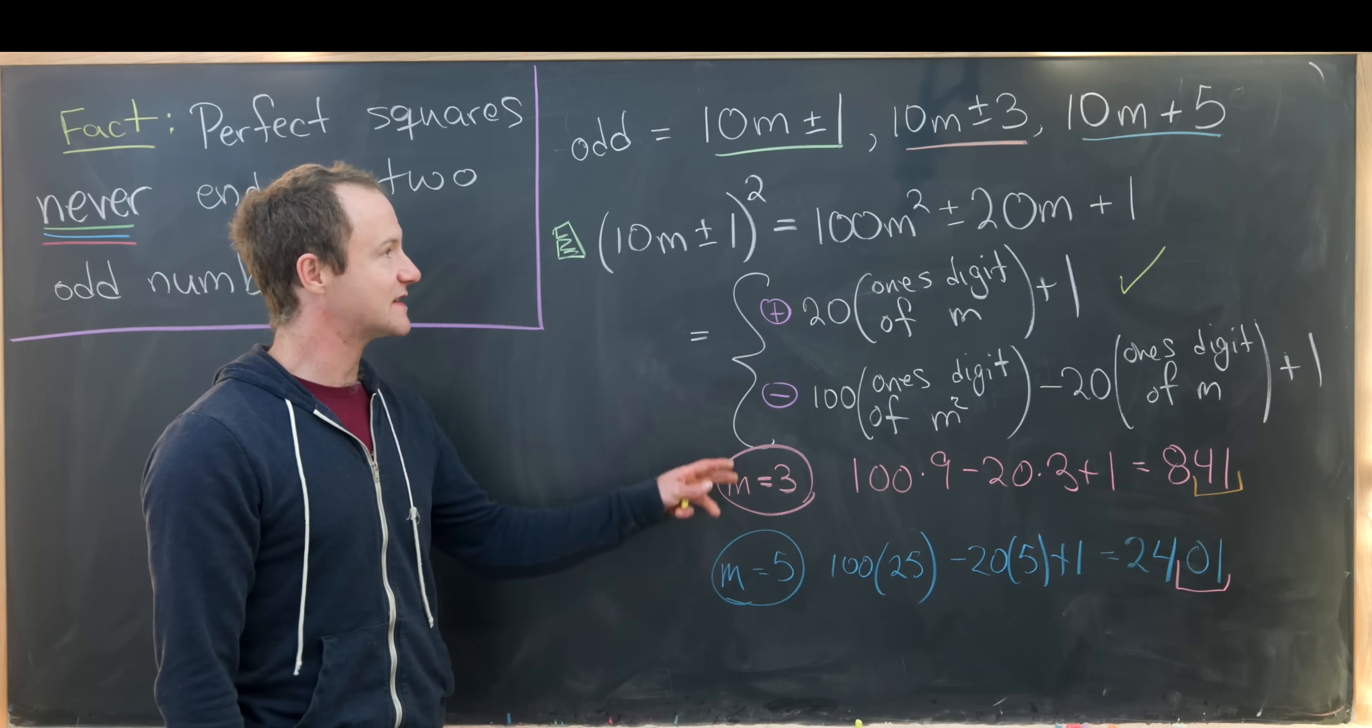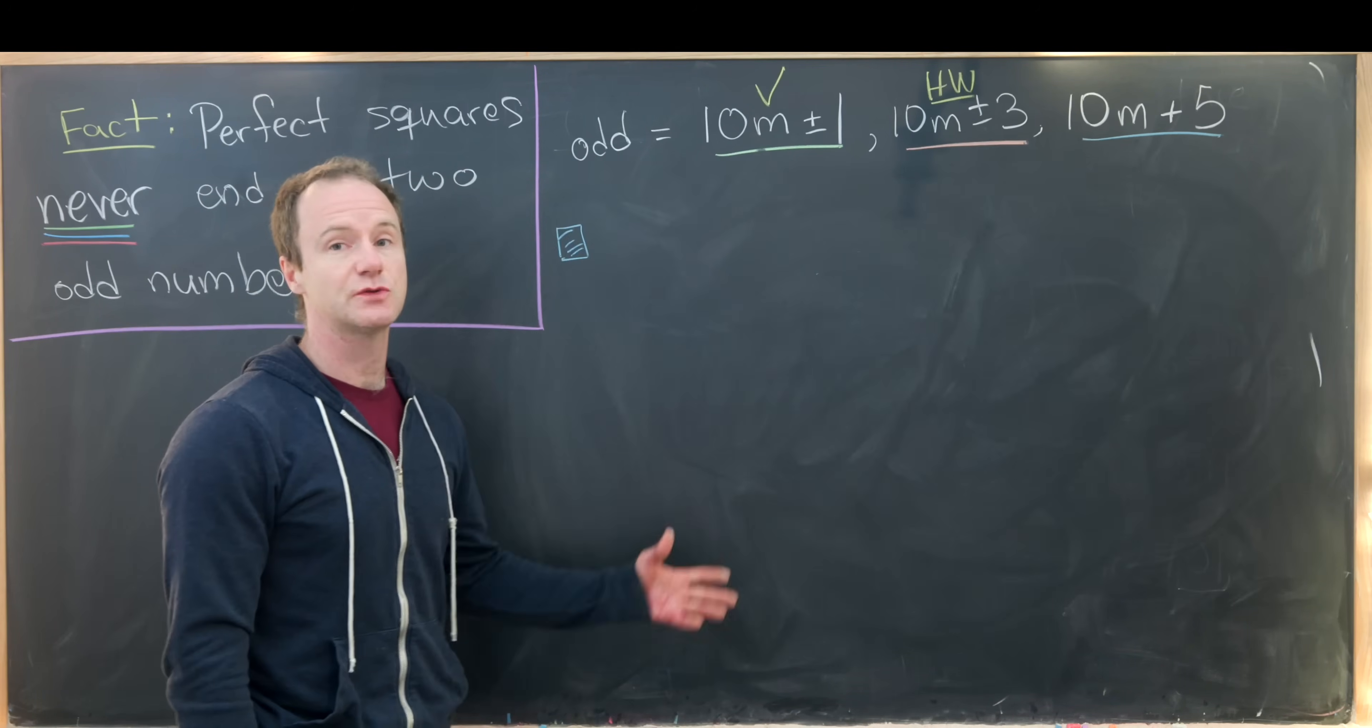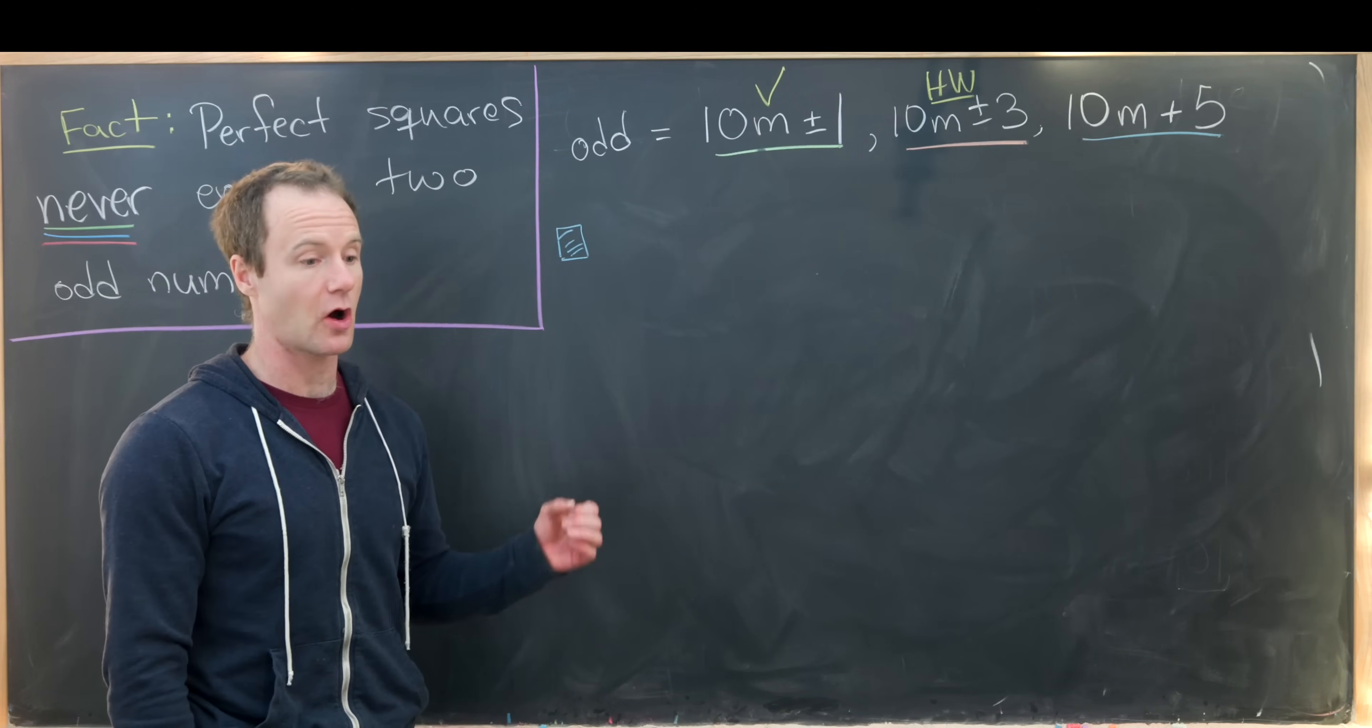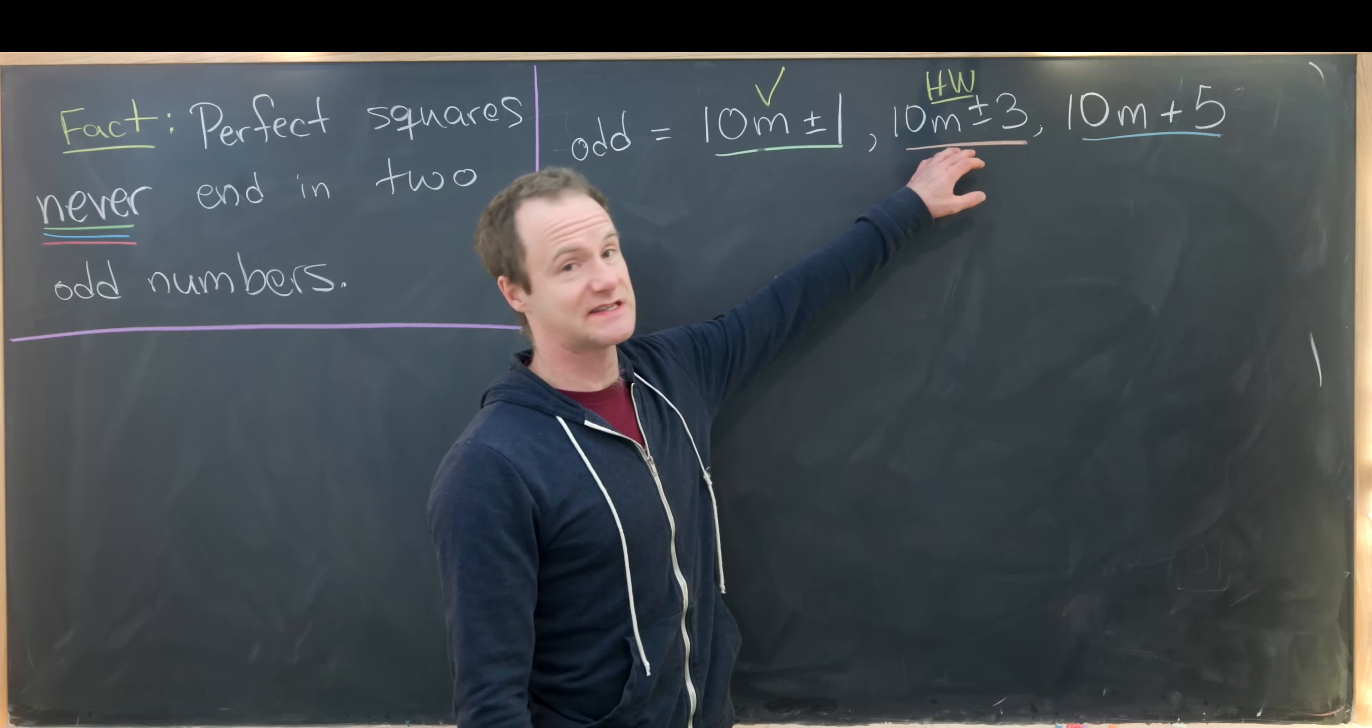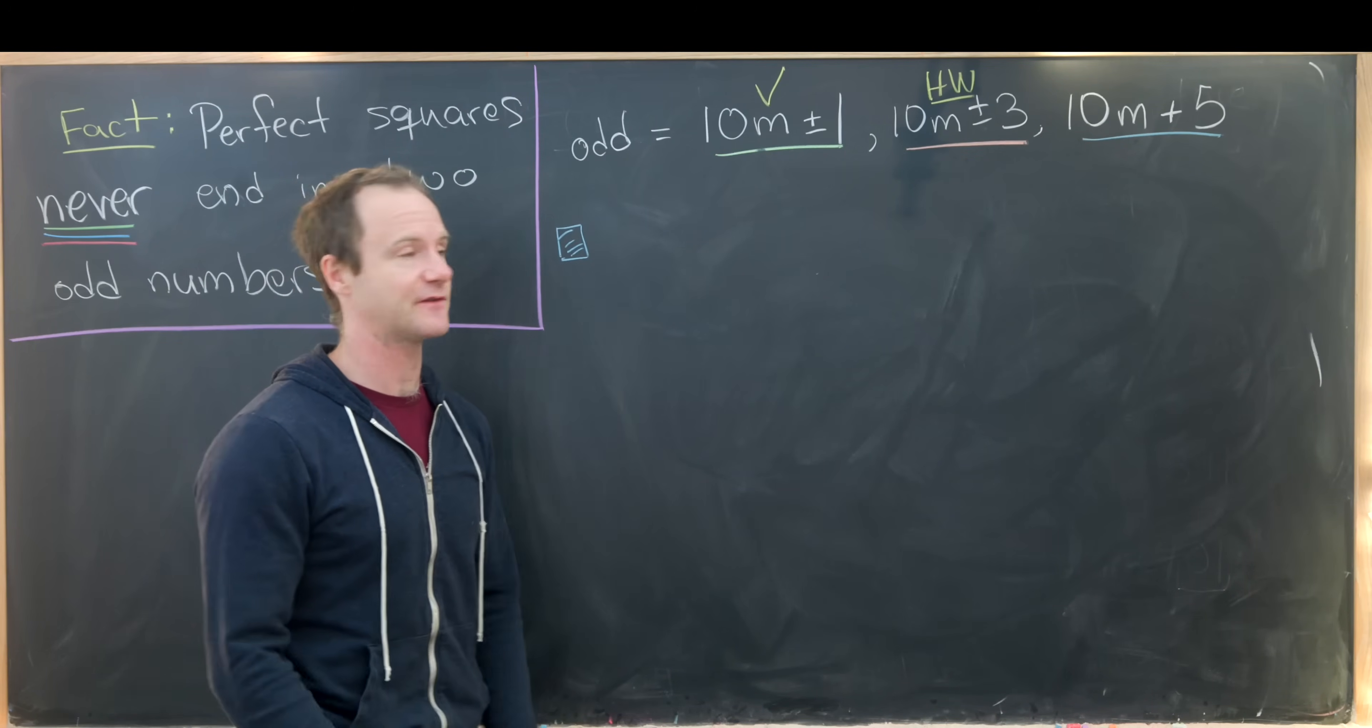So now let's clean this up. And maybe we'll do the last case. And I'll leave this middle case as a homework problem. So we just looked at the details as to why a number like 10m plus or minus one squared always ends in an even number and then an odd number. And thus it does not end in two even numbers. Then similar strategy can be used here. I'll leave that as a little homework exercise. I think that'll be a good idea to get an idea for how this is working.